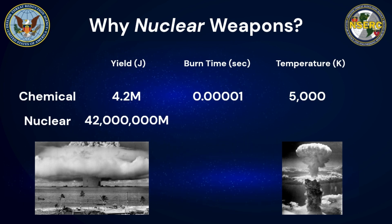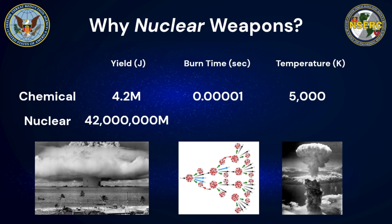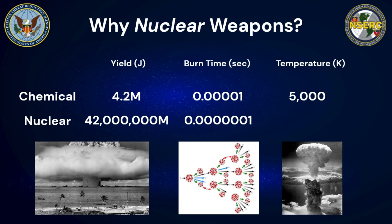Additionally, the entire fission chain reaction takes significantly less time than the chemical reactions in TNT. Fundamentally, this means the atoms are splitting at rates and over time scales well below those found in chemical reactions. In fact, our entire one kilogram of uranium-235 fuel would burn in about 0.1 microseconds. Hypothetically, we could detonate 100 one-kilogram nuclear explosions one after the other in a series, in the same amount of time it takes for one kilogram of TNT to detonate.